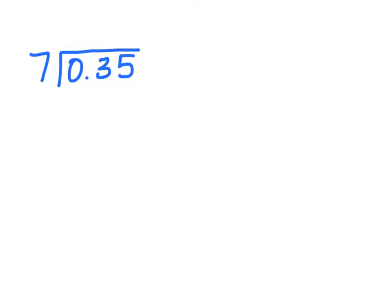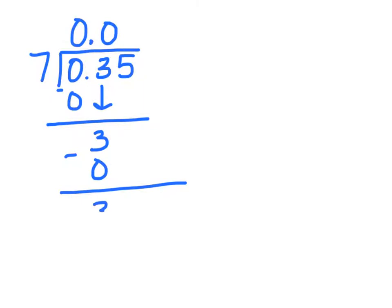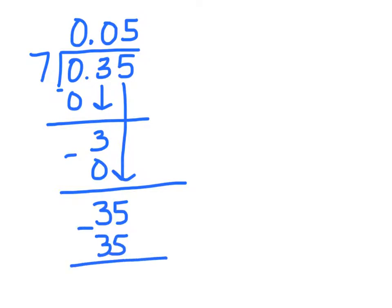Let's work another example: what is 35 hundredths divided by 7? We'll begin by dividing the ones place by 7, which gives us an answer of 0. 0 times 7 is 0, and we'll bring down our 3. How many times does 7 go into 3? Zero times. Better remember to bring up that decimal point. So 0 times 7 is once again 0. We'll bring down our remaining 3 tenths and bring down our 5 hundredths. How many times does 7 go into 35? 5 times. 5 times 7 is 35, which leaves us with no remainder. So 35 hundredths divided by 7 equals 5 hundredths.